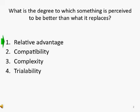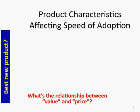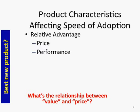We'll talk about relative advantage as well as compatibility, complexity, and trialability as product characteristics that affect the speed of adoption. Relative advantage deals with two things: price and performance.